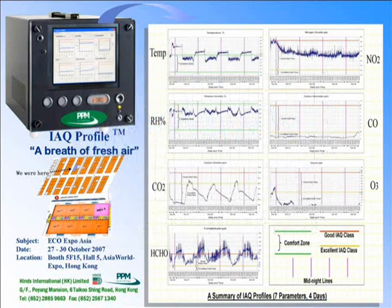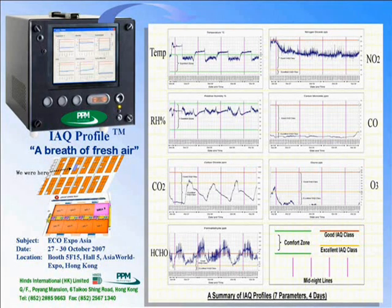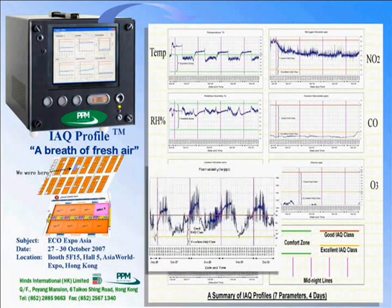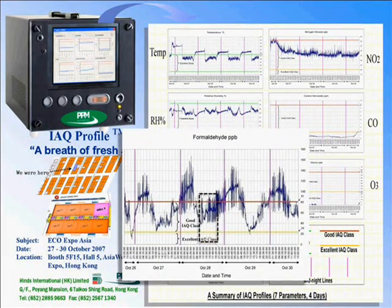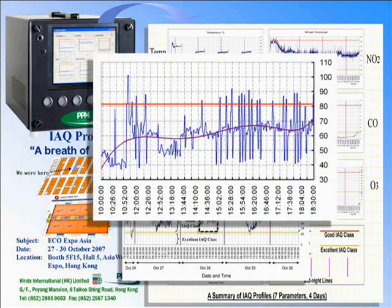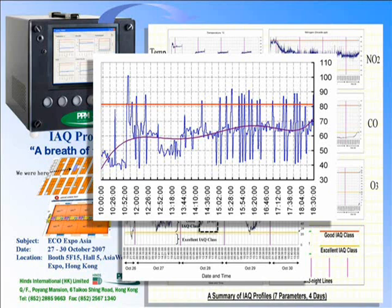Now this is the most irregular profile — formaldehyde. Let us magnify it. This day is the worst. Let's pick this section during the exhibition time to see what happened. The computer can draw the average based on this — no manipulation. You can see it right away.